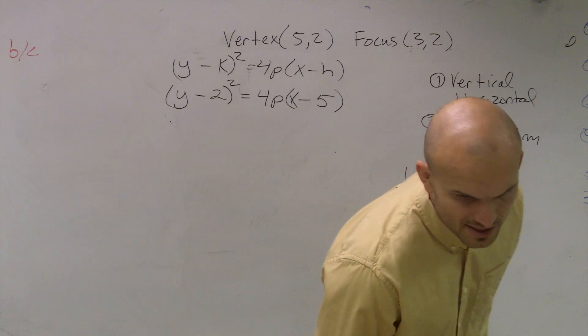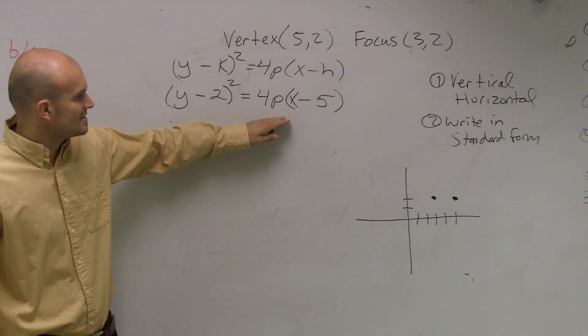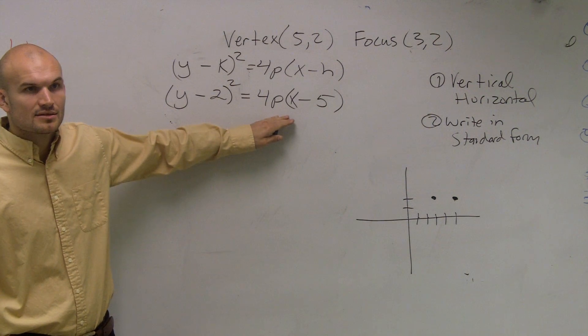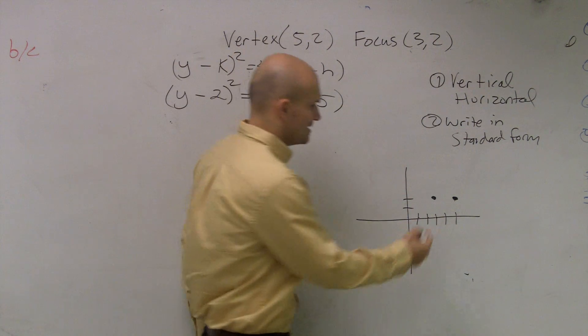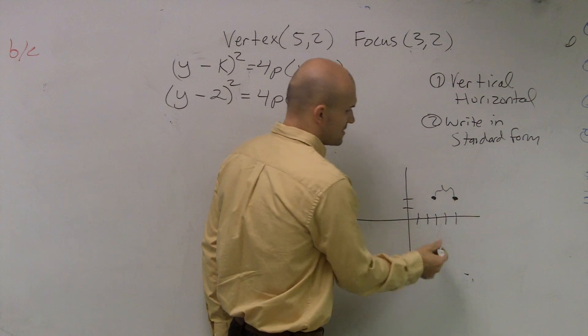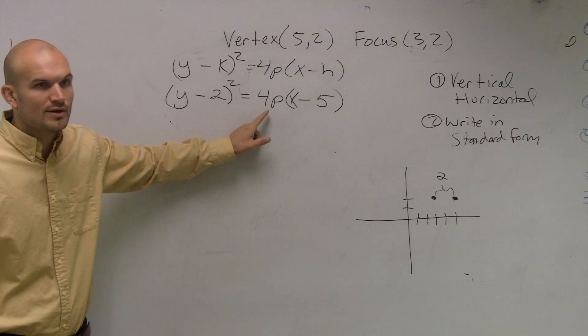Actually, what did they just ask for? They just want us to find the standard form of the equation of the parabola, right? So that's all we need to do. So the next thing is they tell us what p is. Well, they don't tell us what p is. We need to figure out what p is. Well, remember, p is this distance, right? So that distance was 2. So I just plug in 2 for p.